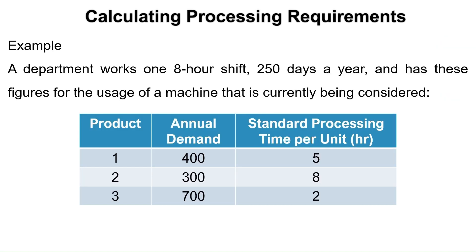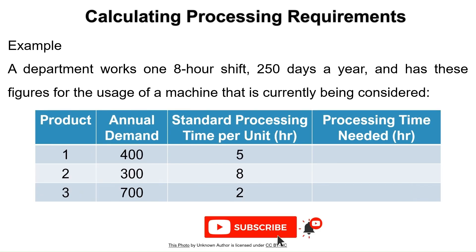Let us solve an example. A department works one 8-hour shift, 250 days a year, and has these figures for the usage of a machine currently being considered, as shown in this table. First, we need to find the processing time needed in hours by multiplying the annual demand of each product by its standard processing time per unit.